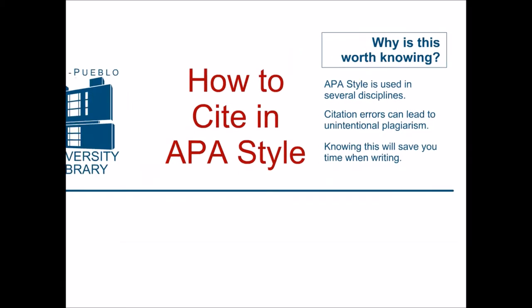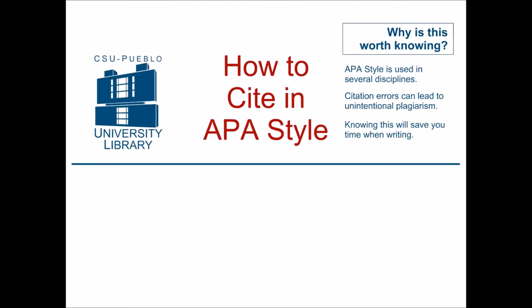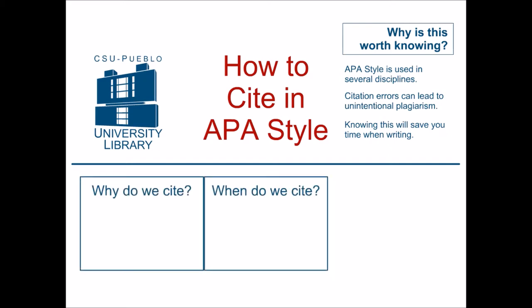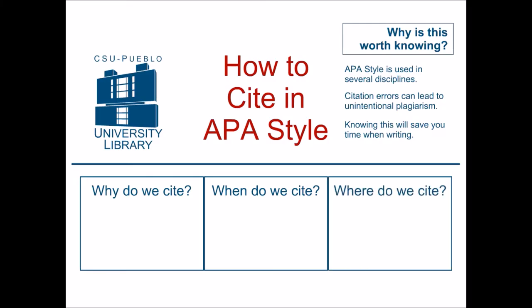This class answers three questions, as well as provides some examples of APA citation. The first question is, why do we cite? The second is, when do we cite? And the third is, where do we cite?